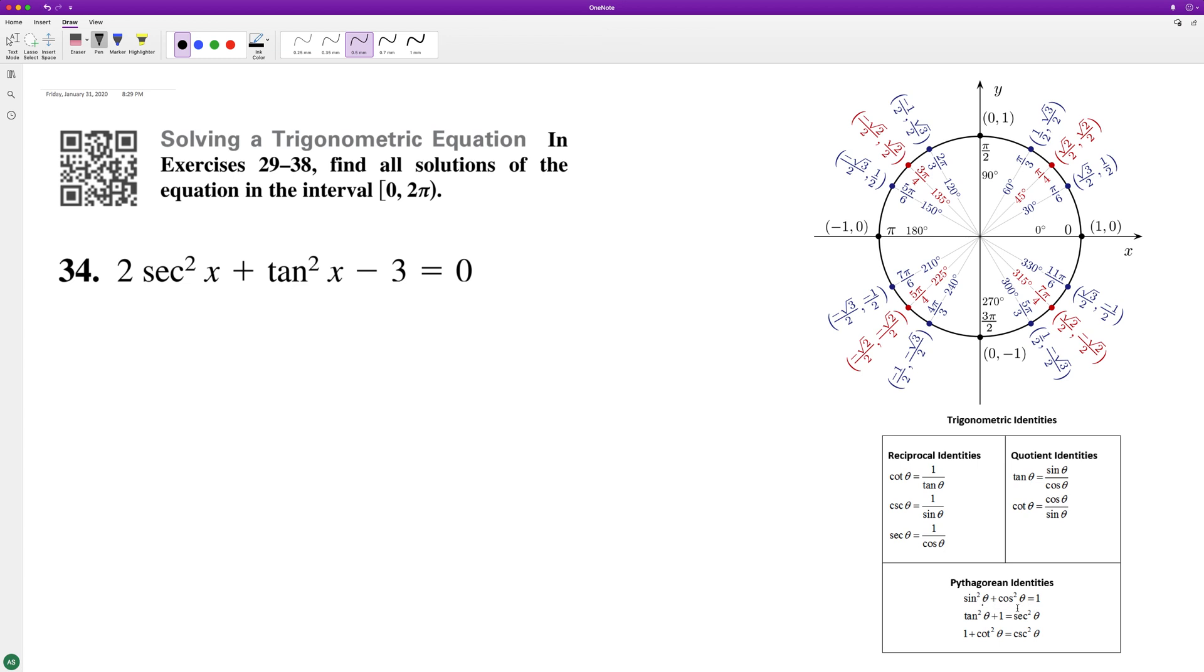We'll convert secant squared x into tangent squared plus one, so we'll do two. We'll have our tangent squared x plus one plus tangent squared x minus three equals zero.